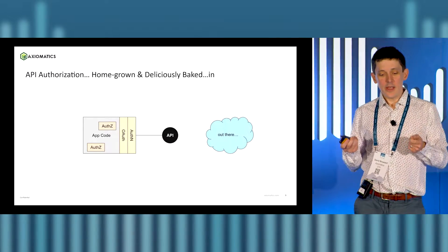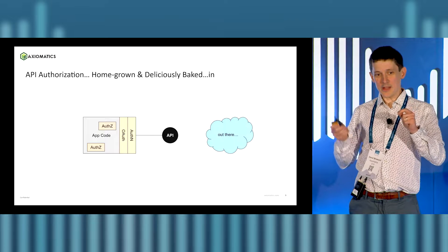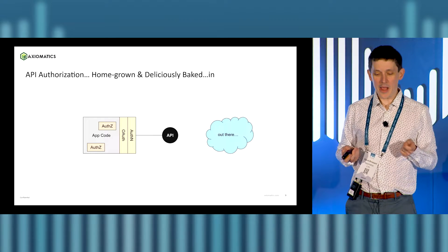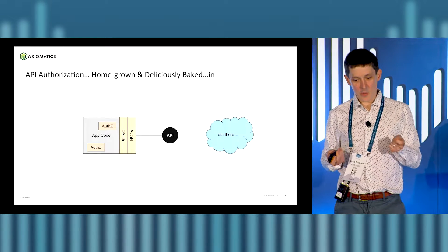App code is not authorization. Yes, you can do really fine-grained authorization within your app with app code, but then you end up with spaghetti code. You end up forgetting if-statements. You end up having very poor visibility of what level of authorization you're doing within your app. You end up having very brittle systems that you have to update when a new rule comes in. So API authorization, when it's homegrown, it's delicious and your developers are super happy, but it just doesn't scale well.